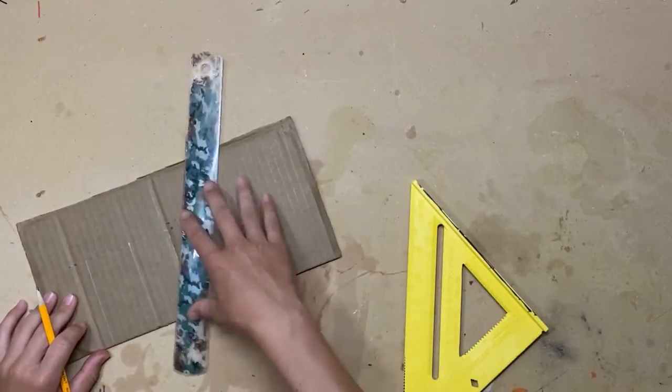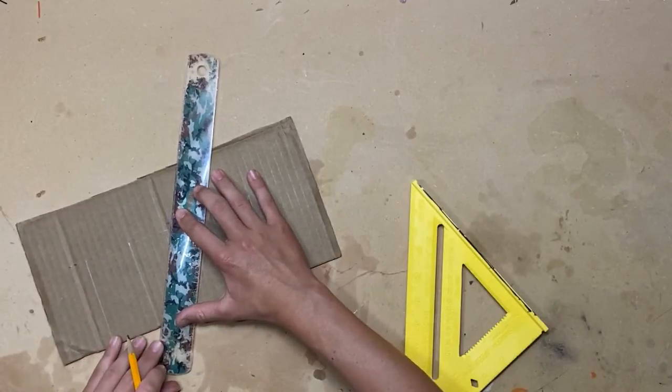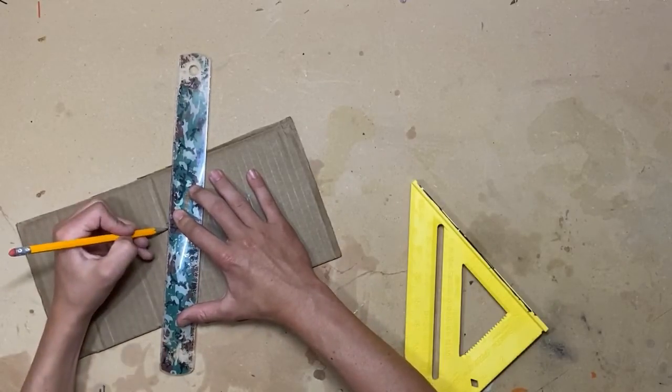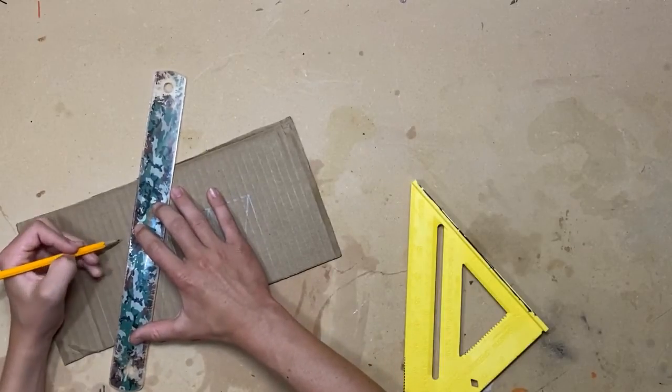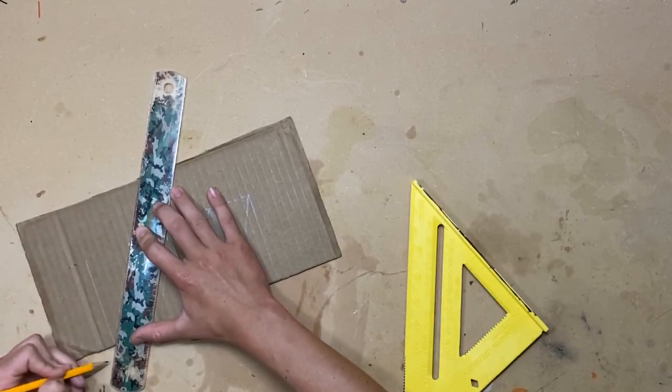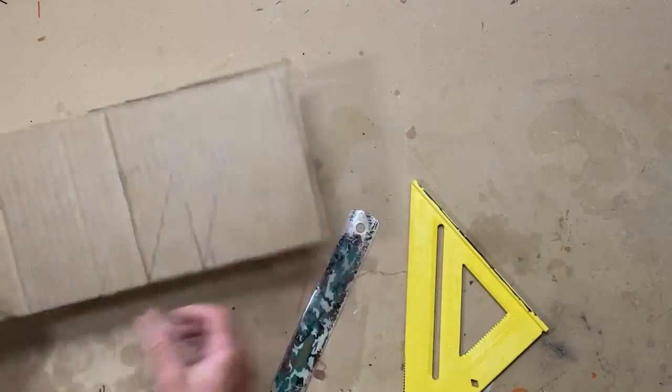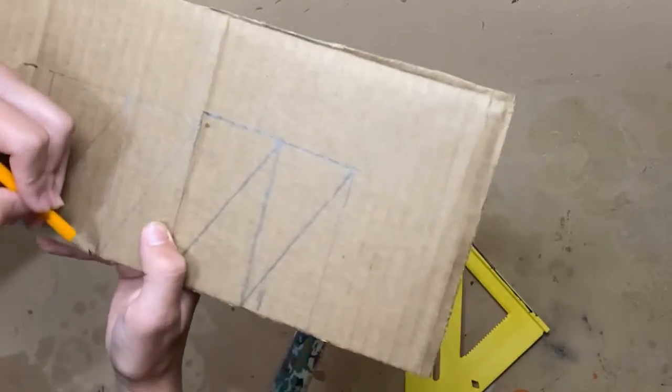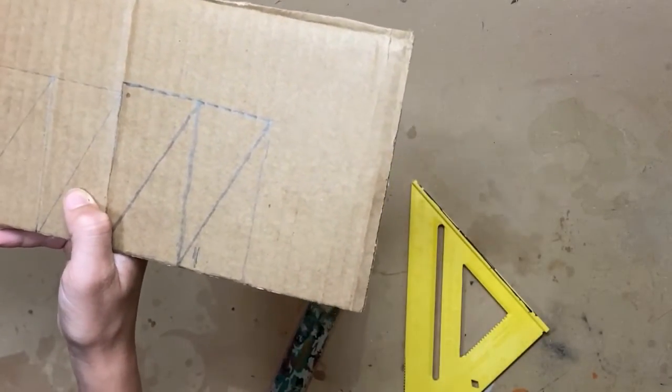Now, take your ruler and line up your corner here, and then your other corner here. Then, trace down the ruler, and then do the same thing on this side. Now, you're going to get rid of this piece. This is going to be your fin, and then this is just junk.